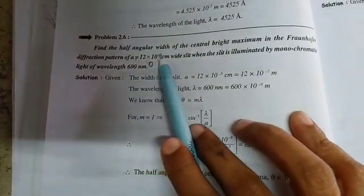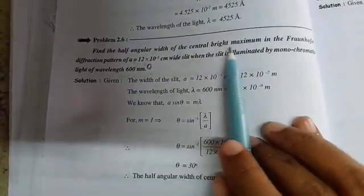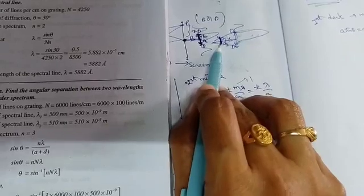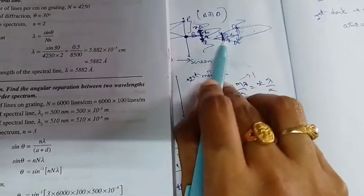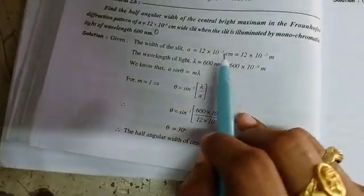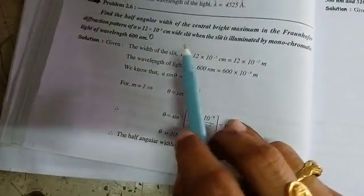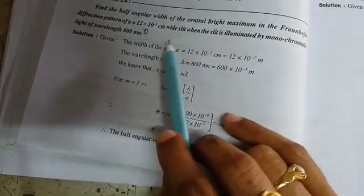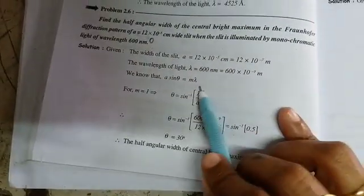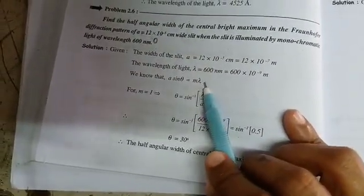Find the half angular width of the central bright maximum. The central maximum spans 2 theta, so the half angular width is 2 theta divided by 2, which equals theta. In this question we have to find the theta value. For the first dark band, sin theta equals lambda by a, so we substitute the values to find theta.